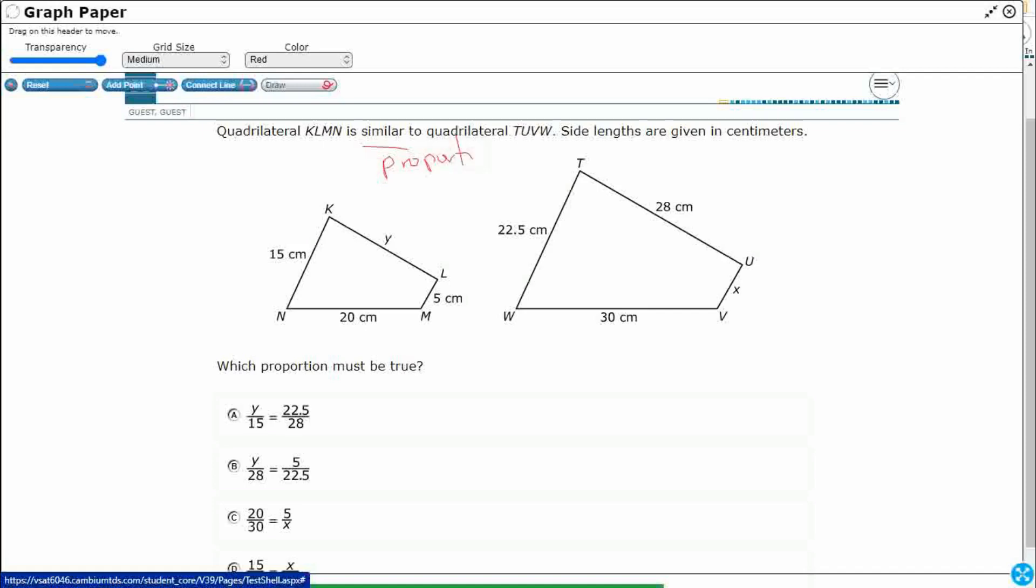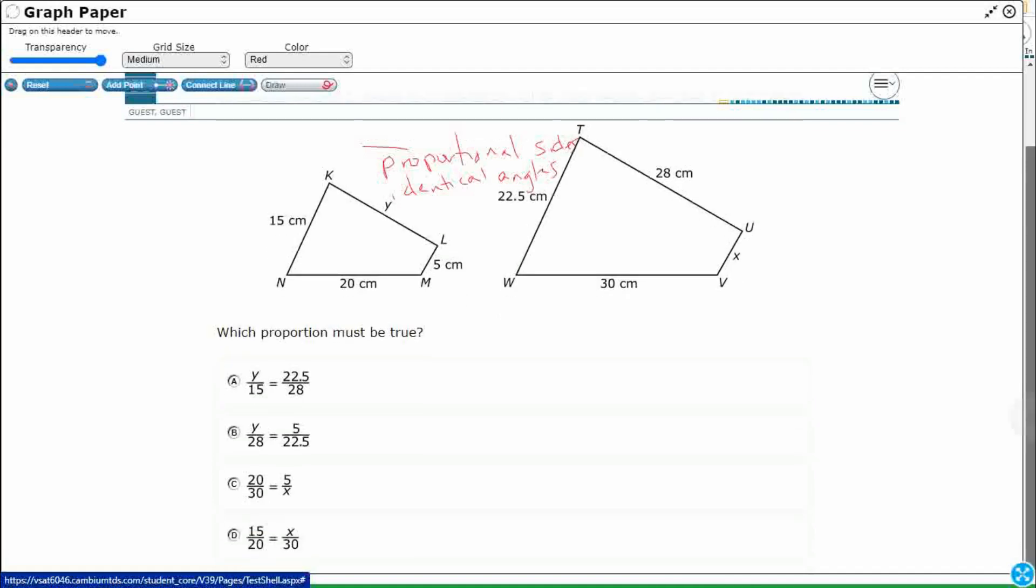So that's one thing we get from this: proportional sides. But this also means that we have identical angles. The angles stay the same; it's just the side lengths that either shrink or grow. Alright, so we're going to find a proportion here. That means we need to find a proportion that is comparing side length to side length, either across those or within those. So let's take a look at each of these.